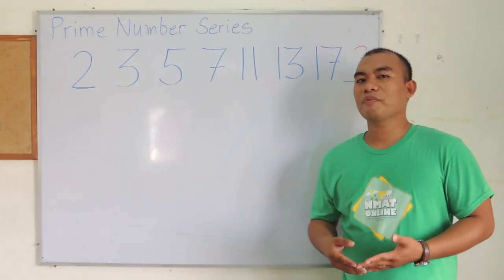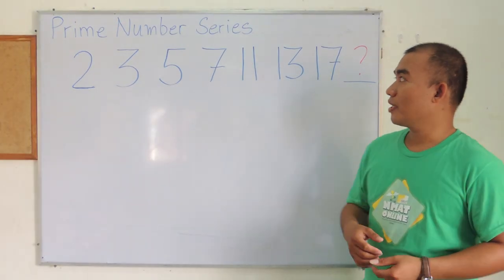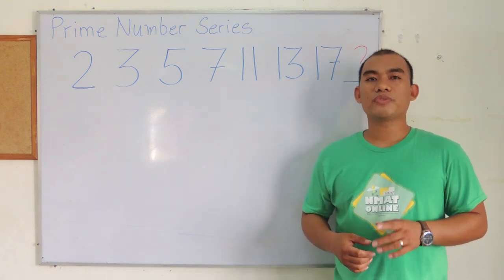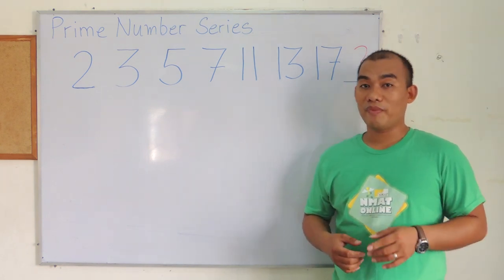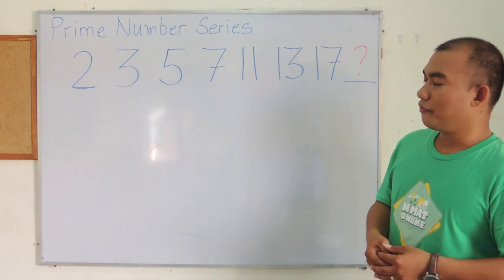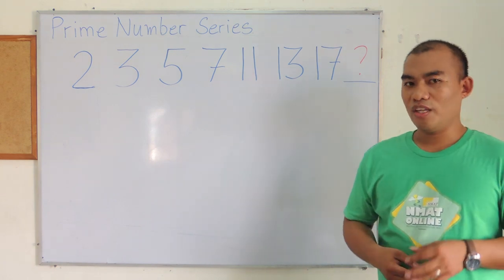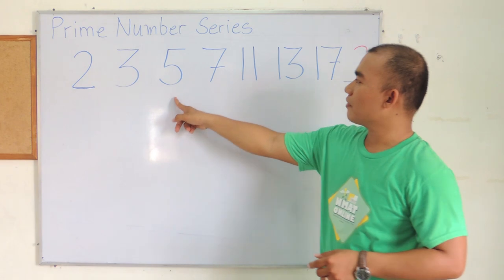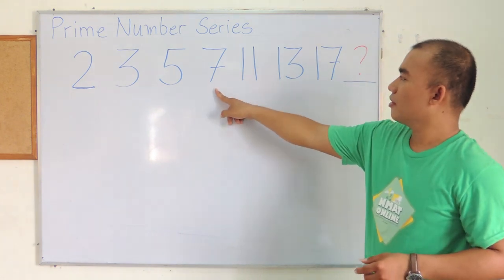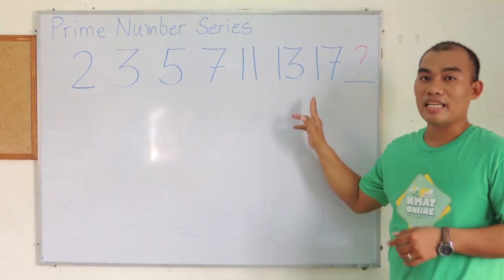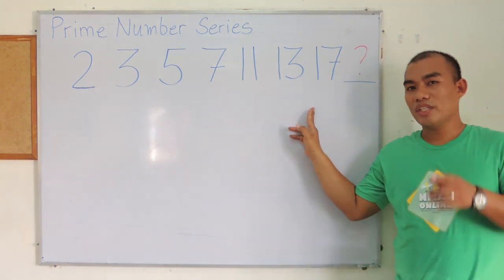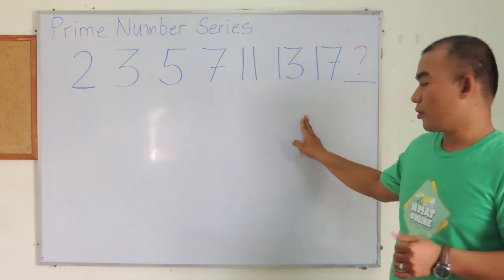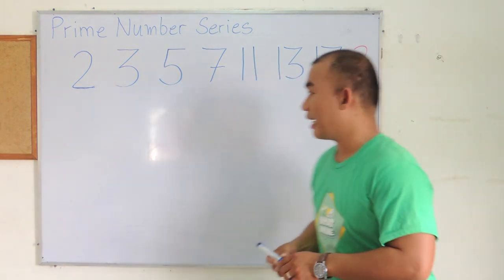The next type of series is called the prime number series. The terms in a prime number series are obtained from prime numbers. The first prime number — and the only even prime number — is 2, followed by 3, 5, 7, 11, 13, 17. The next prime number after 17 is 19, so the answer is 19.